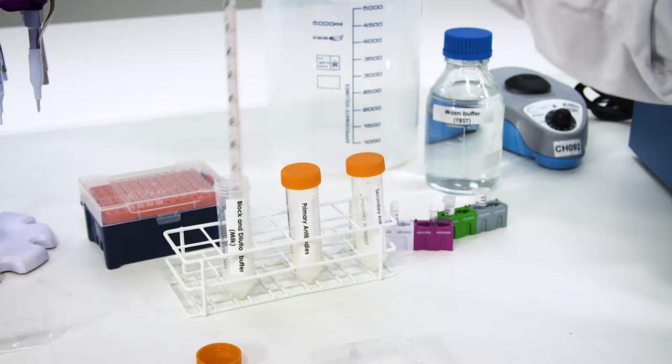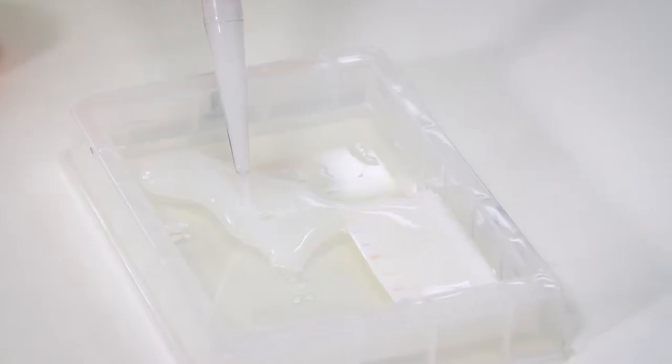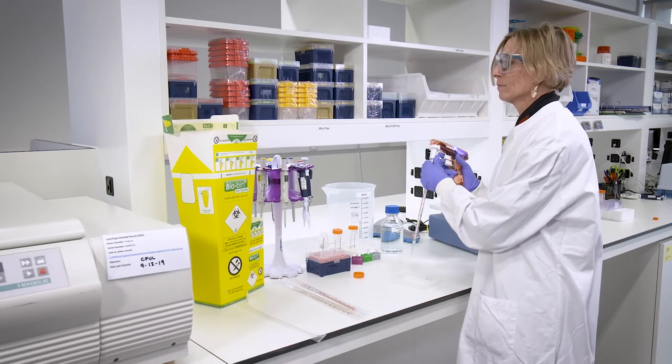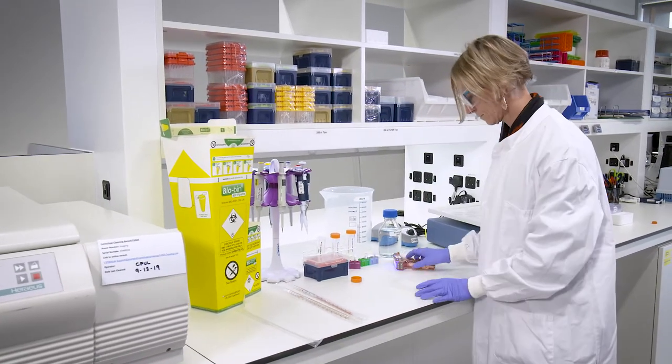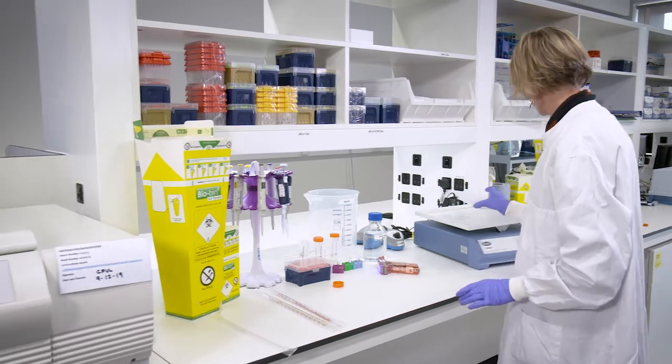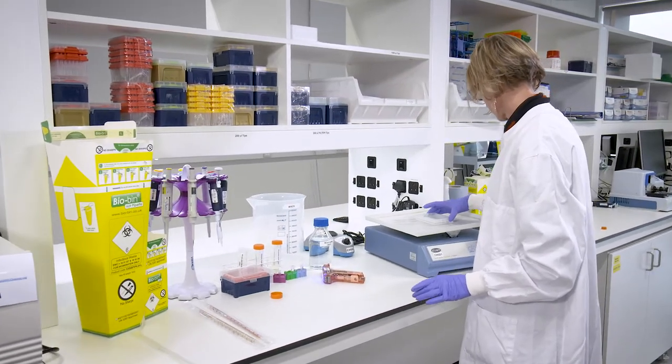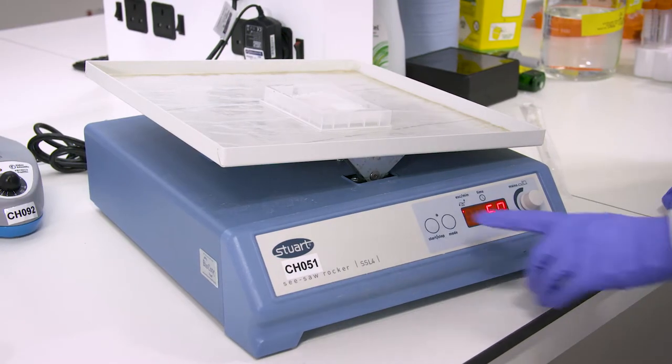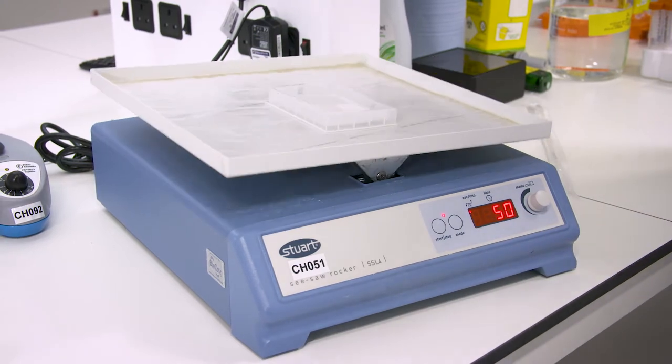But check your antibody's datasheet for the optimal solution. Place the membrane in a tray and cover with blocking buffer. Place the membrane onto a rocking platform and incubate for one hour at room temperature or overnight at 4 degrees Celsius.